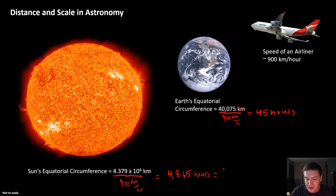In days, that's 202 days. Imagine that for a second. To fly around the Sun, it would take 202 days, where on the Earth it would take 45 hours.